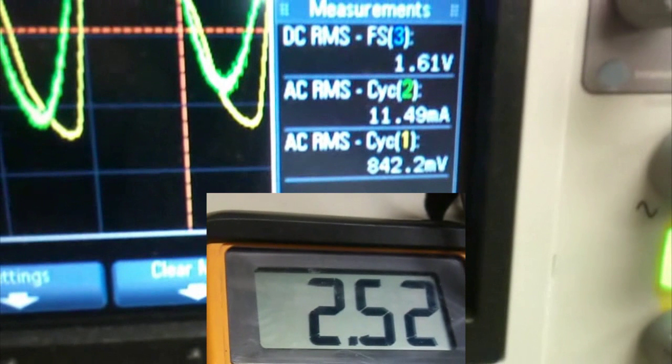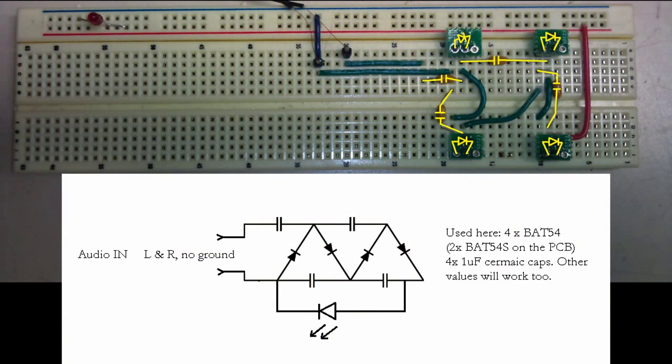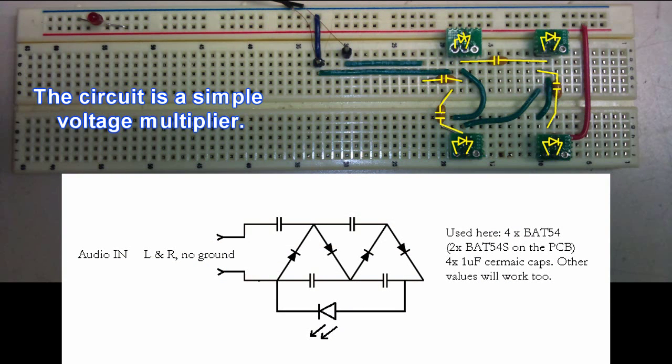The output is at 1.62 volts, that's limited by the LED forward voltage drop and the current is at about 2.5 milliamps. The circuit is very simple, just four diodes and four capacitors.